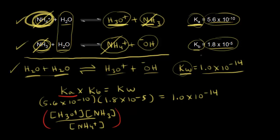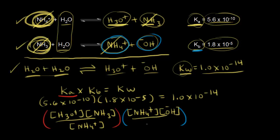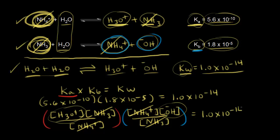Now let's think about Kb. Kb equals products over reactants — the concentration of NH4+ times the concentration of OH minus, all over the concentration of NH3. When we multiply Ka times Kb, the NH4+ and NH3 terms cancel, and we're left with [H3O+] times [OH-], which equals 1.0 times 10 to the negative 14. This is another way to see how Ka and Kb relate to Kw — if you know one, you can figure out the other.